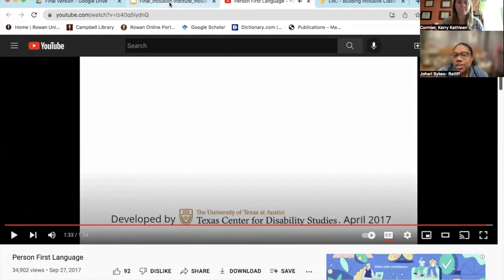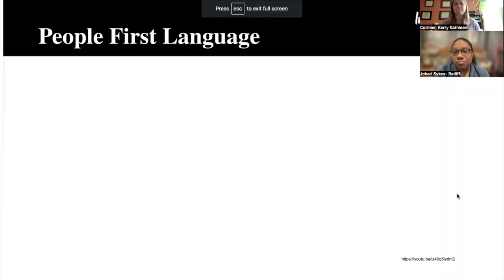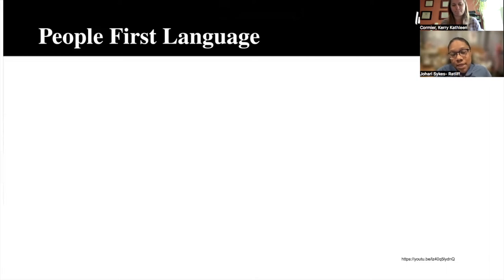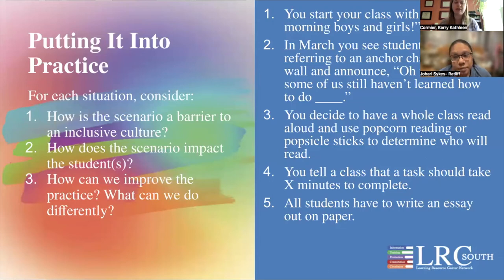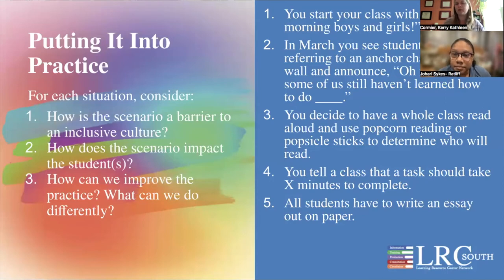This was a reminder — or new information — that you'll hopefully be able to incorporate into your language before labeling a person, being very clear about how you're referring to someone when connecting their disability to what you're saying. We want to take some time now to put things into practice. For each of these situations, think about how the scenario might be a barrier to inclusive culture, how it impacts students, and how we can improve the practice. If you want to pause the video, read through these five different examples, and then we'll come back and discuss.